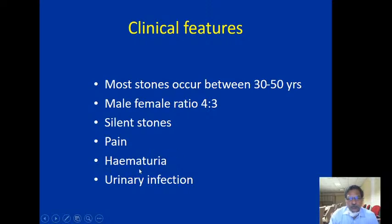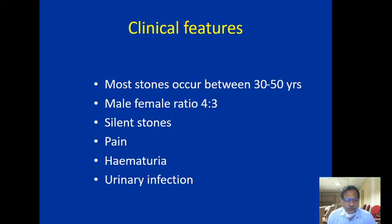Haematuria — blood in the urine — can be caused by stones. Frank blood can be the presenting symptom, though most of the time it is only microscopic haematuria. Urinary infection can be another way of presenting — the patient has symptoms of urinary tract infection and on investigation a stone is found to be aggravating and causing the infection. So pain, haematuria, and urinary infection are all ways the disease presents.